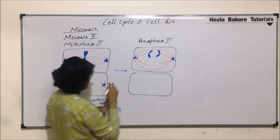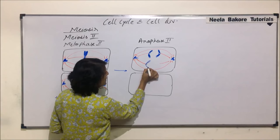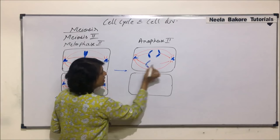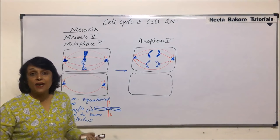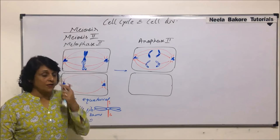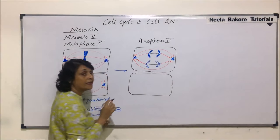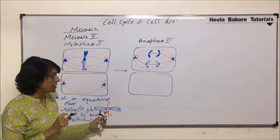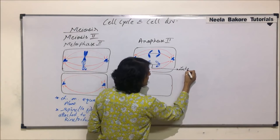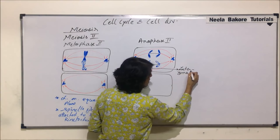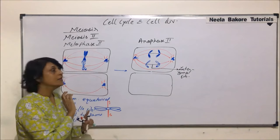So these two parts have separated. On this side, let us show this one — it had this exchanged material, and here this exchange material. As they have separated by splitting of the centromere, we would see a fiber appear in between these centromeres which have undergone splitting. We will call this fiber the interzonal fiber. Interzonal fiber appears only when the centromere splits.